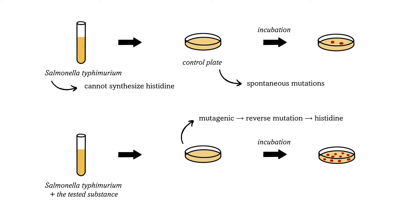If there are large colonies of bacteria on the test plate, the substance is considered mutagenic and possibly also carcinogenic. It is important to realize, however, that the test only serves as evidence of the substance being mutagenic — in other words, capable of inducing mutations. Although mutagens are usually also carcinogens, substances need to be further tested to be considered carcinogenic.